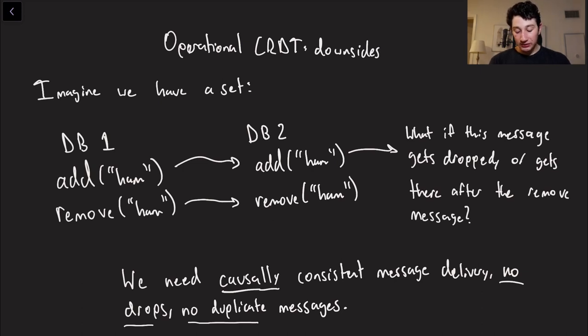So in this case, let's say on leader 1 or database 1, I'll just write an L here to indicate it's a leader, and then database 2 is also a leader. On database 1, we're going to first add ham to our set, then we're going to remove ham from our set. And then on database 2, we're obviously going to be propagating those operations. So first, it receives the fact that we're adding ham, and then it's receiving the fact that we're removing ham from our set.